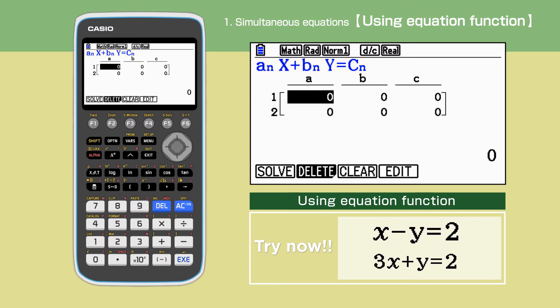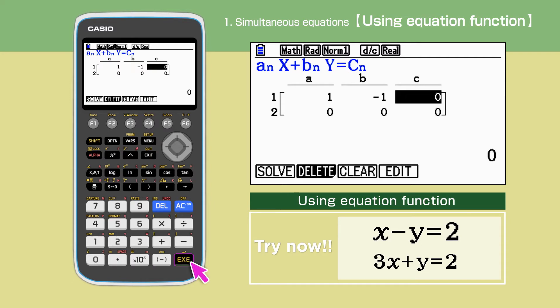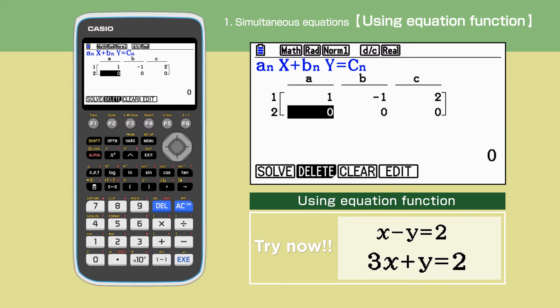Enter the coefficient of X, 1, in 1A, coefficient of Y, minus 1, in 1B, and then the constant 2 in 1C. If a coefficient is negative, we need to make sure to use the bracket minus and not the subtraction minus. Repeat the same process for the second equation.